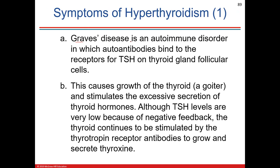Graves' disease is again an autoimmune disorder — thyrotropin receptor antibodies bind to receptors causing massive thyroid growth and excessive hormone secretion. TSH levels are low due to feedback, but the autoimmune antibodies keep stimulating the gland. This is hyperthyroidism with a thyroid goiter and excessive secretion of thyroxin. The cause could also be a tumor. Blood tests identify the source.